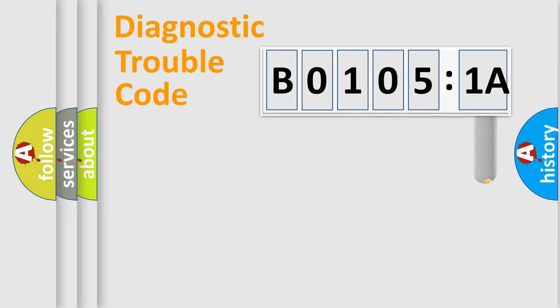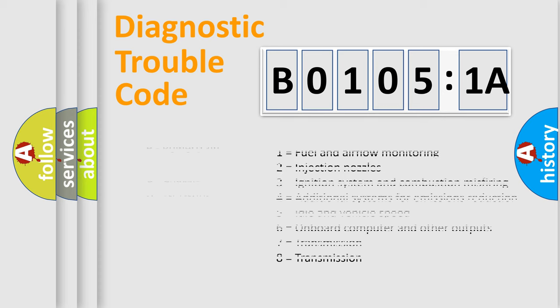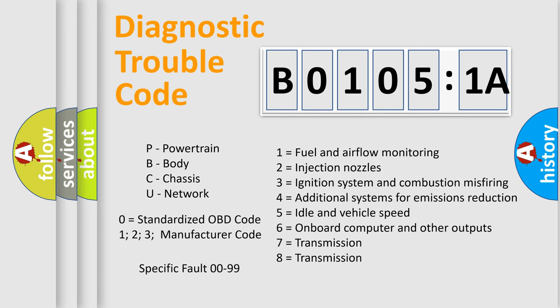The add-on to the error code serves to specify the status in more detail, for example, short to the ground. Let's not forget that such a division is valid only if the second character code is expressed by the number zero.